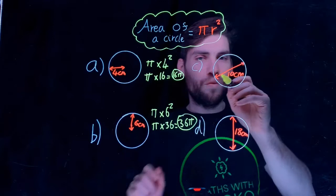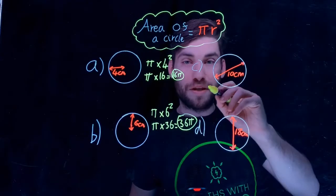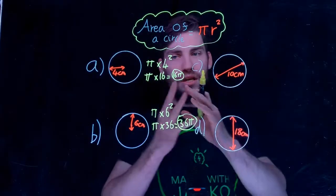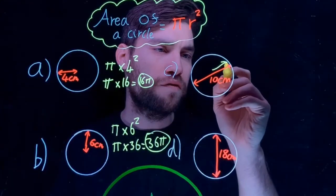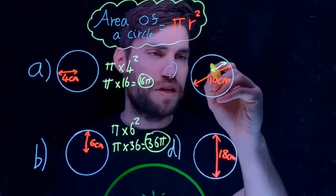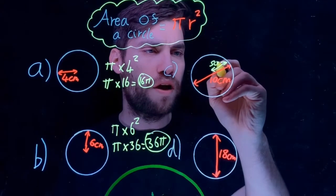This time be careful. We are given the diameter. Diameter is 2 times the radius, so we halve it first. Half of 10 is 5. Now we have the radius.